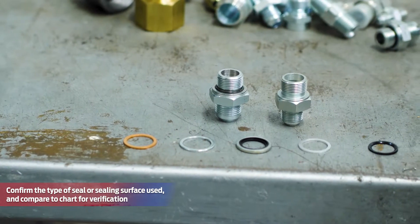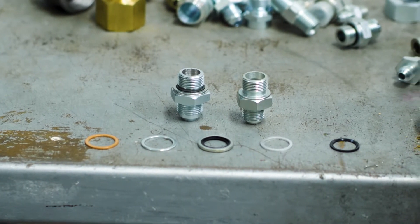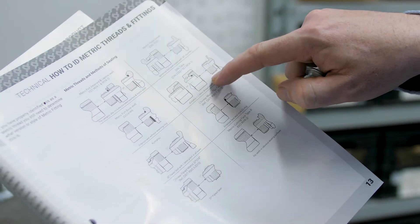Now that you have identified the thread, it is a good idea to confirm the seal type or sealing surface angle to further solidify your findings. Please reference the Adaptal Master Catalog's technical section for diagrams to aid in this step.